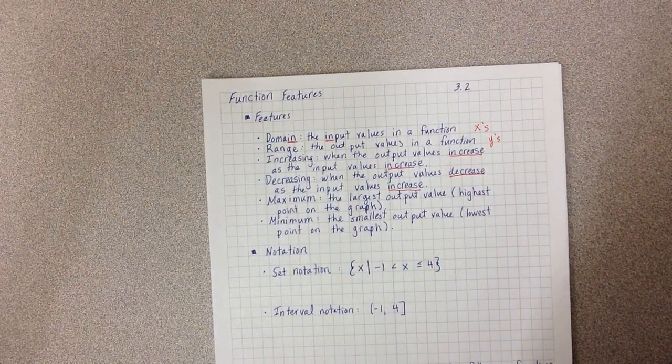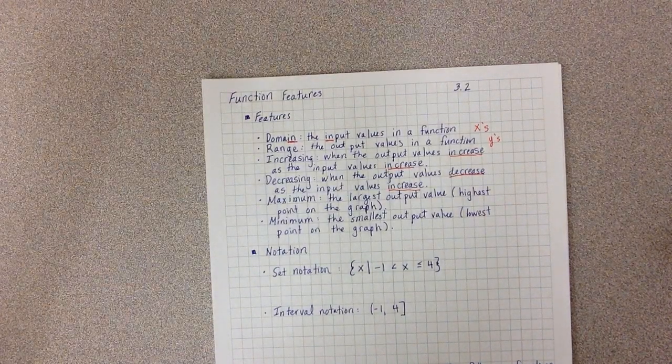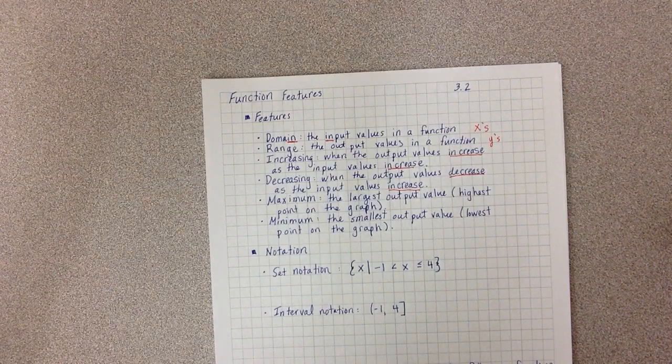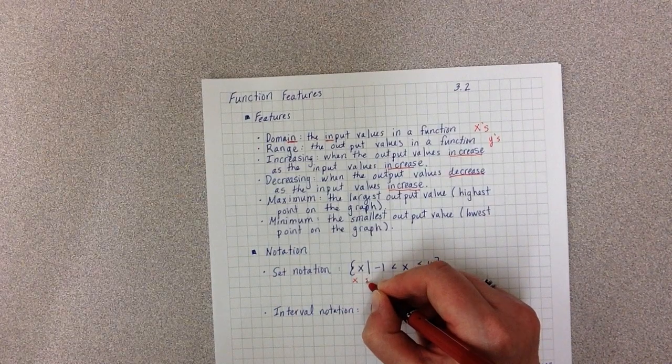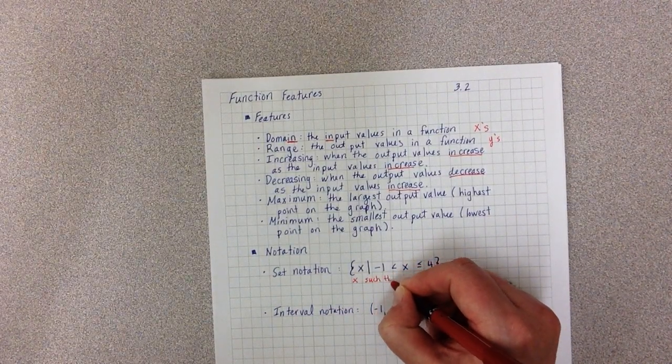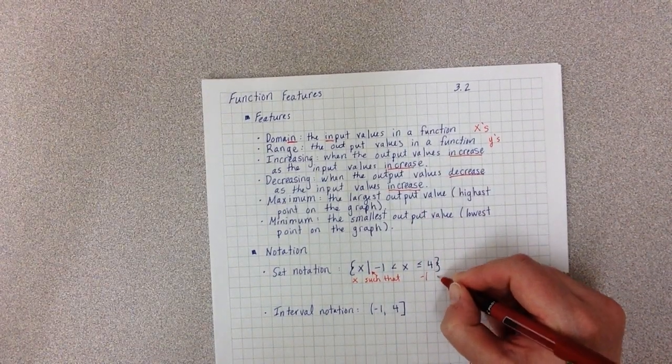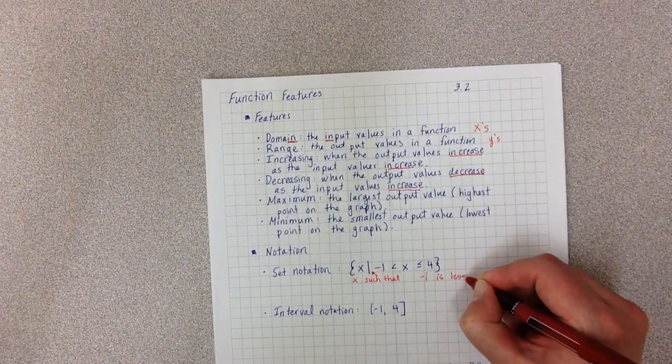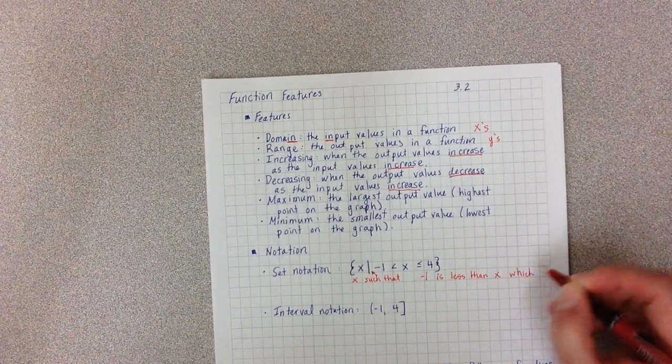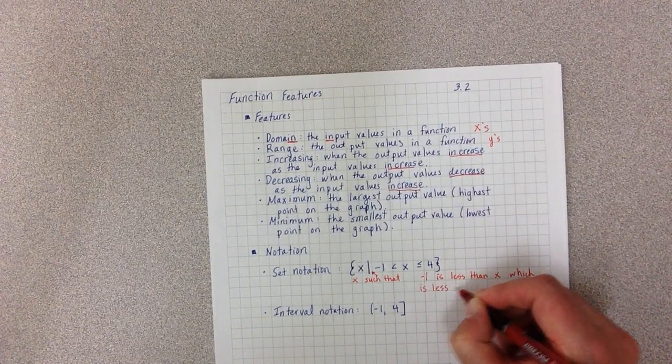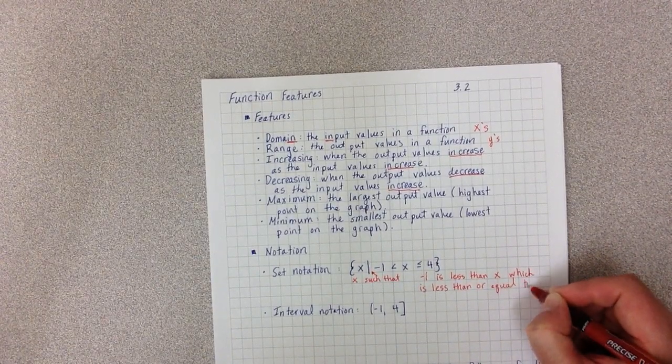Now we have two types of notation that we're going to see throughout this chapter and the rest of the book. One of them is called set notation. And set notation is read as x such that, that's what this line here means, negative 1 is less than x, which is less than or equal to 4.